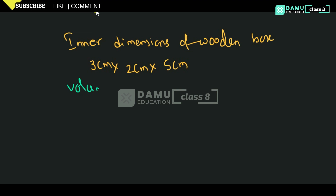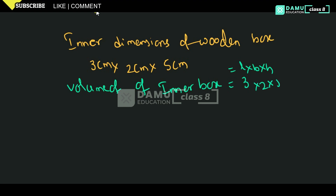Now let's find the volume of the inner box. Volume of inner box is length into breadth into height, that is 3 into 2 into 5. Three 2s are 6, and 6 fives are 30 centimeters cube. So the inner volume is 30 centimeters cube.